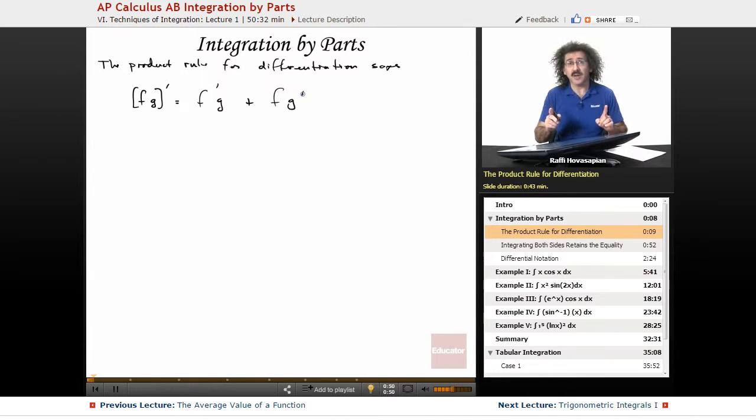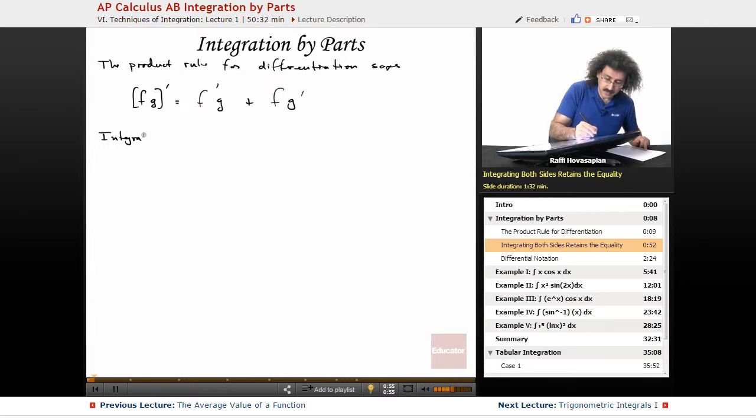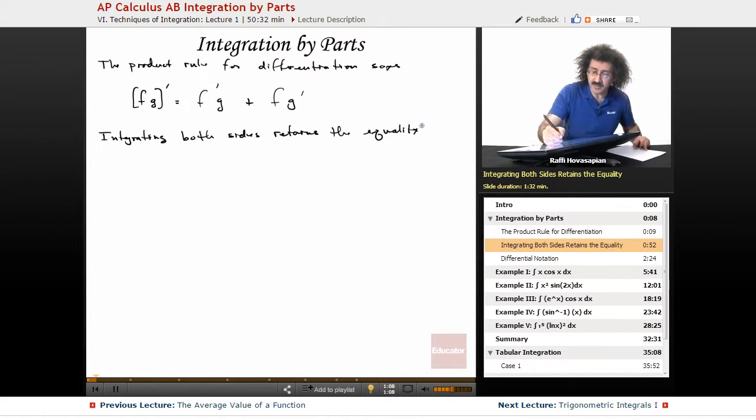Now if I integrate both sides, I can retain the equality. Integrating both sides retains the equality, as we know. Anything we do to one side, as long as we do it to the other, everything is fine. So we've got the integral of f g prime equals the integral of f prime g plus f g prime.